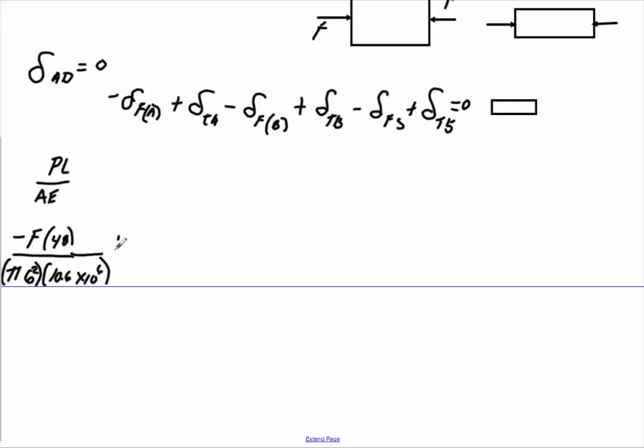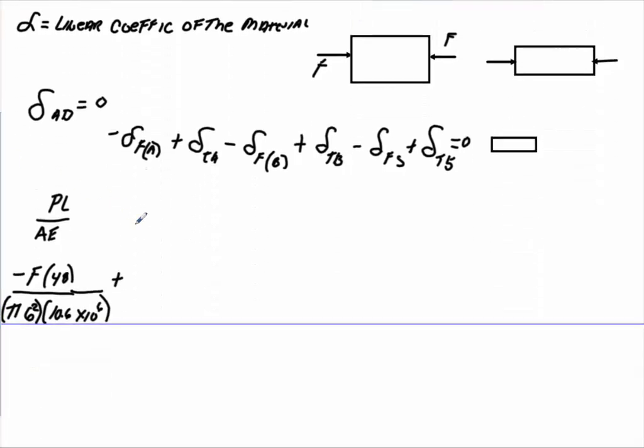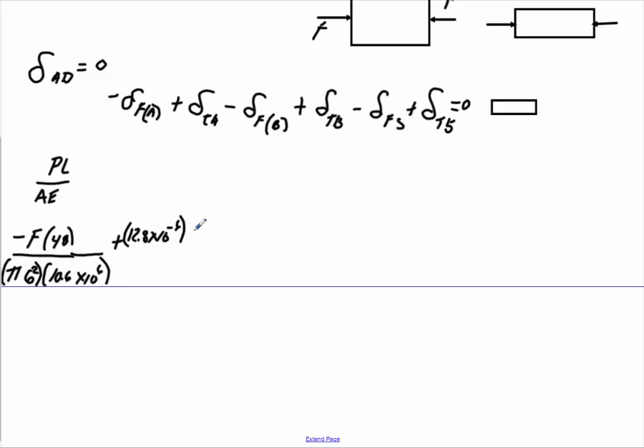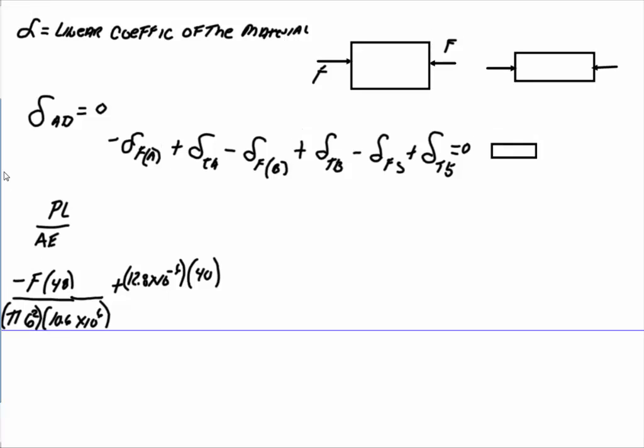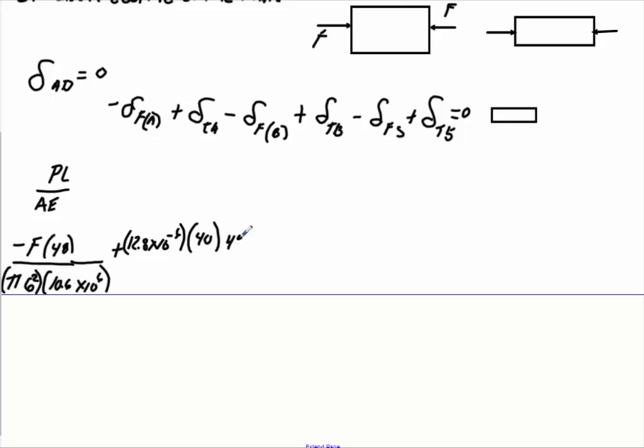And then times the E value, which in this case will be 10.6 times 10 to 6. Okay, and then plus, and we're using the above equation here, and if you look up the linear coefficient of expansion for aluminum, that value will be about 12.8 times 10 to minus 6. Times the change in temperature, and our change in temperature. We started at 70, and we went to 110. So that would be 110 minus 70. So in that case, that would be 40. And again, all we have to do is multiply it by the length. We'll just follow this equation here, which would be 48 inches.